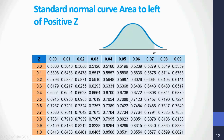Now, reading the standard normal curve area to the left of a positive Z. We have the picture of the standard normal curve with Z marked, and all the area to the left of it highlighted in light blue. That area corresponds to probabilities ranging from 0.5 up to 0.8621 and beyond. If we are asked to find the area to the left of Z, where Z is a positive number, we figure what that Z is and then come inside the table and read it.